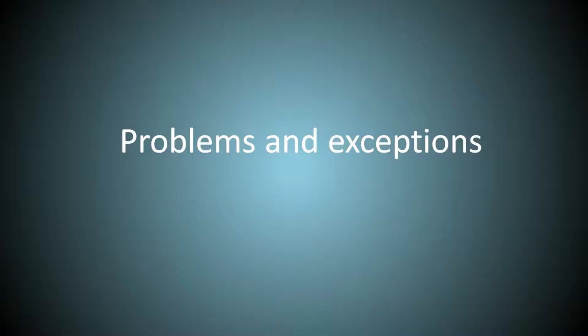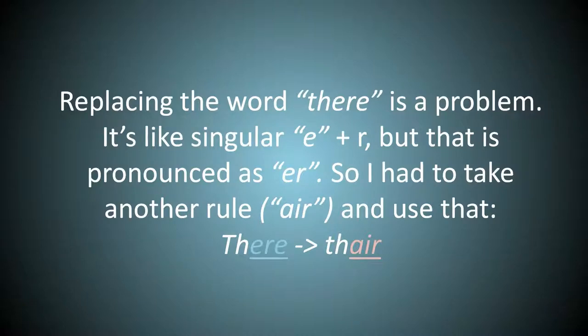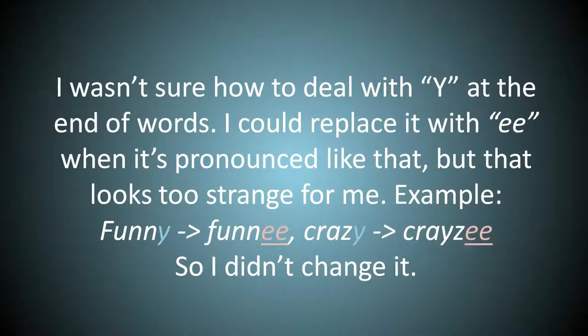Problems and exceptions. I on its own should be like I. But making it I and Y looks too strange for me, so it can stay the same. Replacing the word there is a problem. It's like singular E plus R. But that is pronounced as U. So I had to take another rule, air, and use that. I wasn't sure how to deal with Y at the end of words. I could replace it with double E when it's pronounced like that. But that looks too strange for me. For example. So I didn't change it.